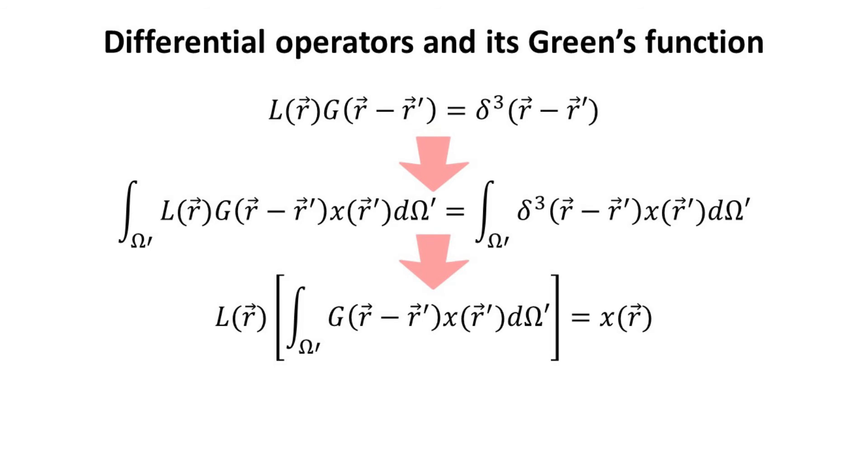The Dirac function in the integrand then picks up the values of X at R. On the left side of the equation, the differential operator L, which acts on R, can be pulled out of the integral. Thus, the term in the square bracket is the response function to the applied source function X.